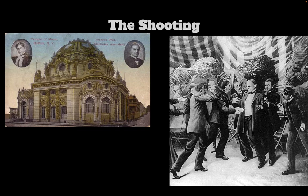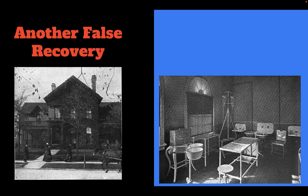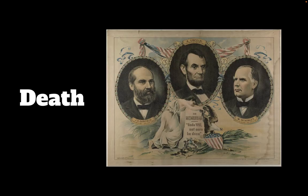Things actually didn't look too bad for the president at first — it seemed like he was going to recover. A surgeon in Buffalo was called in who was performing another surgery and initially said he couldn't break away even for the president, to which they responded that it was, in fact, the president of the United States. The bullet was found lodged in his chest, around his back. Modern doctors have claimed that had McKinley been a little less overweight, or had modern medicine been available, he probably could have survived.